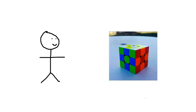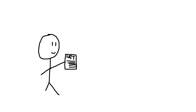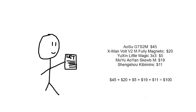The first question comes from GTSCubeStacking, and he asked, if you had $100 to spend on any cubes, what would you get? I would get an Aosu GTS2M, which costs $45, a fully magnetic Valk V2M, which costs $20, a YLM 3x3, which costs $5, a Moyu Aoyan Scube, which costs $19, and a Shang Shao Kidding, which costs $11. Add the prices up, and you get $100.